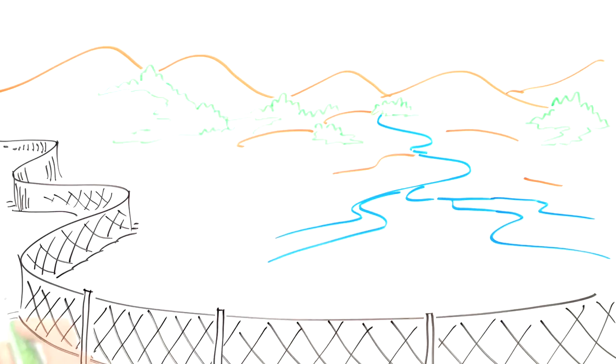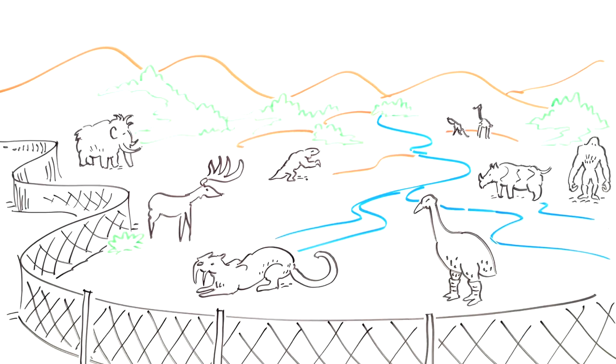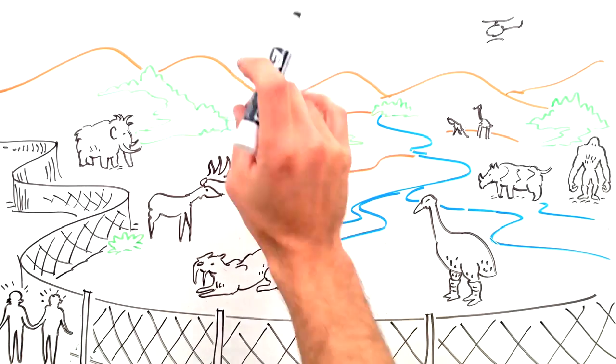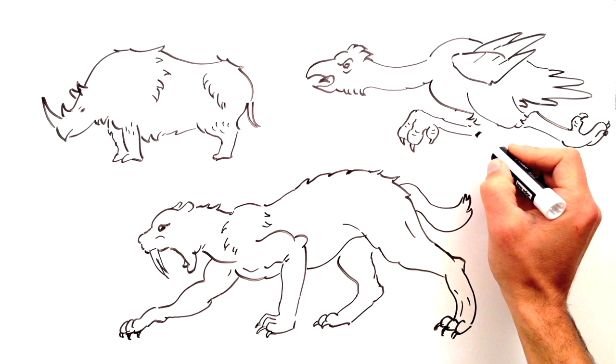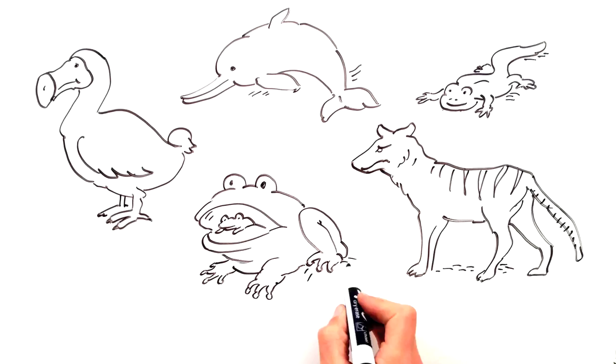Could de-extinction be our chance to make good with nature? Do you think selected areas of the wild could become havens for these big, wild, tusked animals with big claws? Maybe we should just do the cute ones.